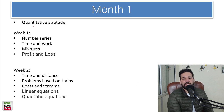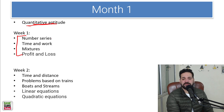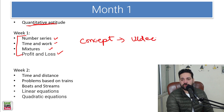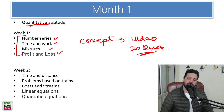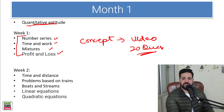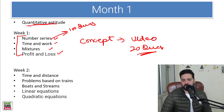In month 1, we will be doing quantitative aptitude. In week 1, we are going to cover number series, time and work, mixtures, and profit and loss. We will provide conceptual videos — you need to watch the concept video followed by 20 questions, which is more than sufficient to understand the entire chapter. For number series you can do around 100 questions, but for time and work, mixtures, and profit and loss, 20 to 25 questions would be sufficient.